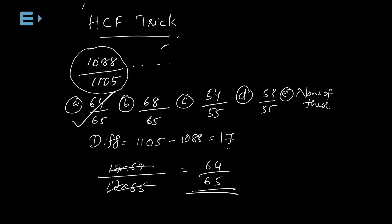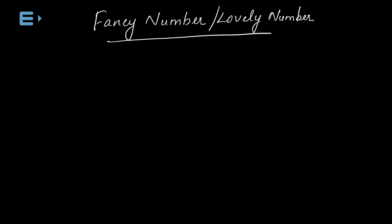This is the HCF concept — simplification. Now, we have to do fancy numbers. The fancy numbers are lovely numbers like 5, 2, 10, 11. Anything we use to get fancy numbers — this is the multiplication method. If you convert using this method, it is a fancy number simplification.